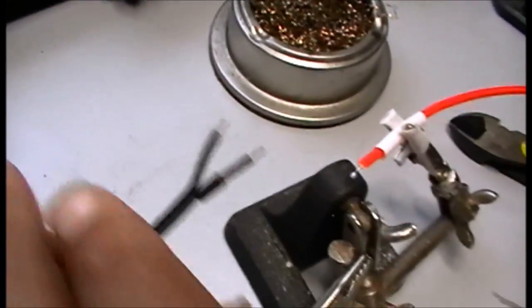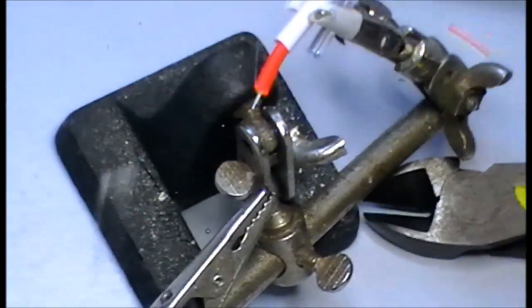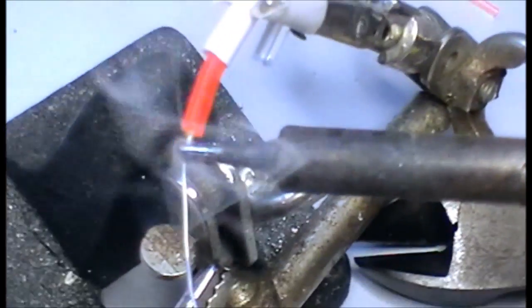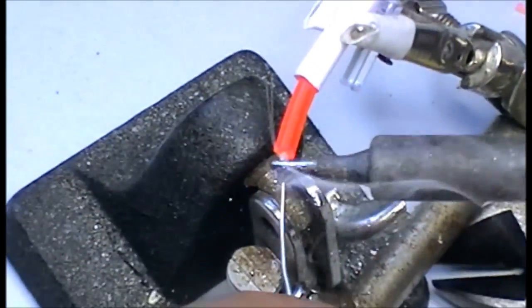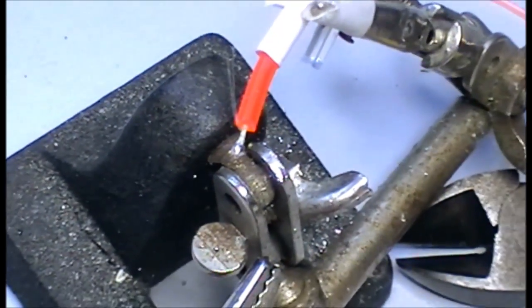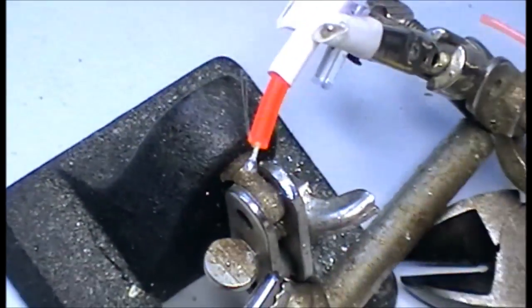He's already stripped the phosphor off—he did it so quick I didn't notice. So the phosphor has already been removed from that core wire and a tiny blob of solder has gone on there.